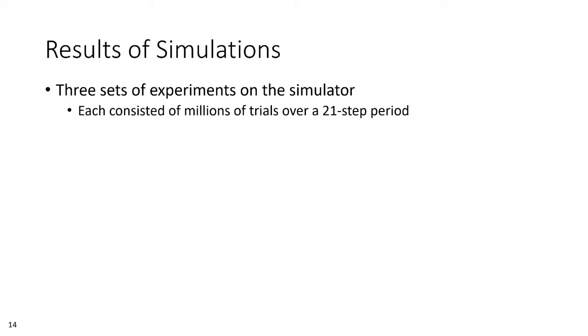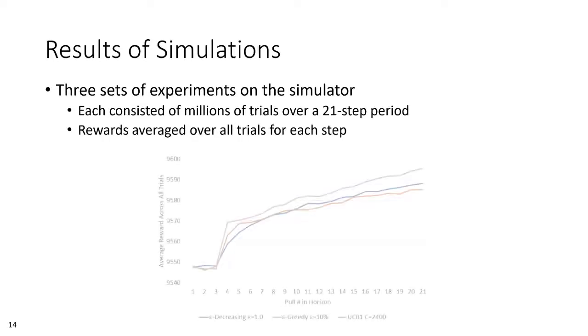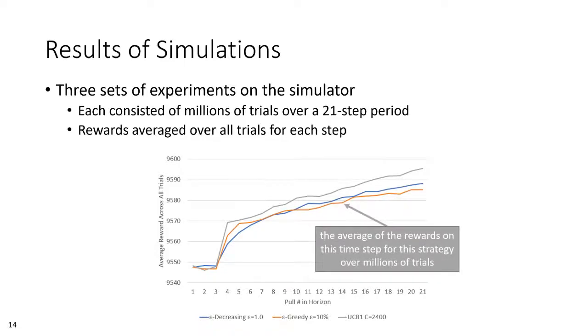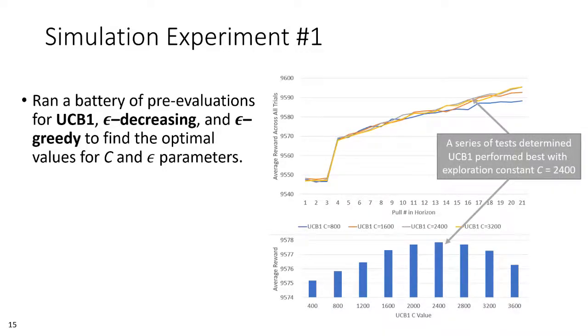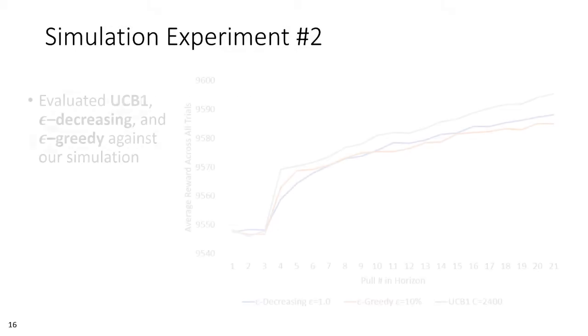We performed three sets of experiments on our simulator, each consisting of a series of trials in which a given strategy guided the experience for a simulated player through a 21-step period, reflecting our anticipated three-week user study. The rewards received by the strategy were averaged across all trials at each step to create a time series that we could then graph to visualize their relative performance. Some of these strategies require a special parameter to be tuned for optimal performance, such as the exploration constant C used in the UCB1 algorithm. Therefore, our first simulator experiment was a battery of tests exploring various values of C and epsilon to discover where each strategy was best tuned for our expected user scenario. Note that finding the proper values for these parameters is critical to the performance of the AI, but doing so would not have been possible in a live user study.